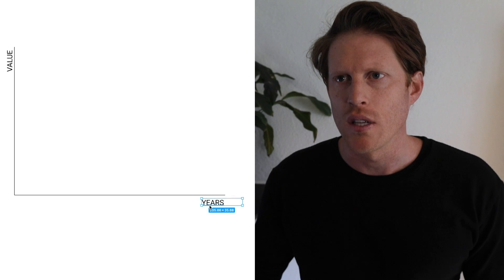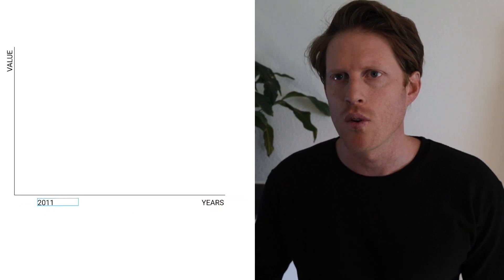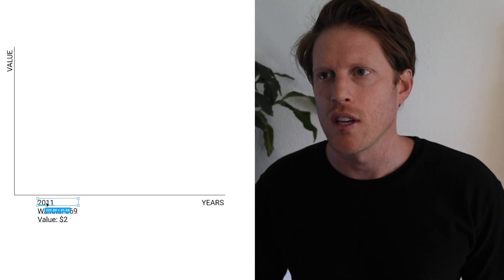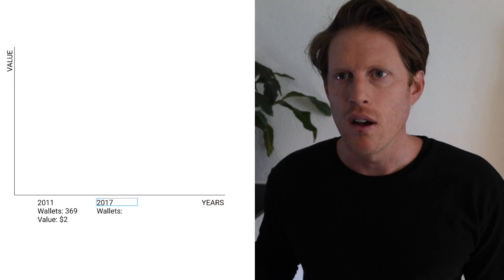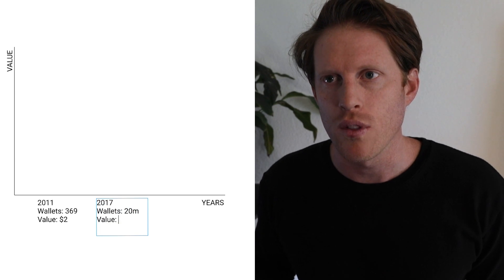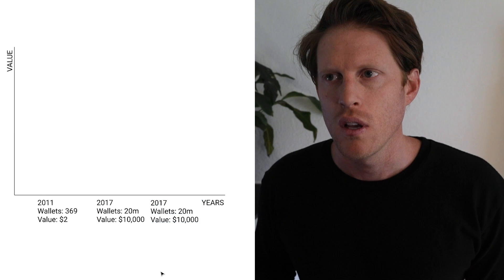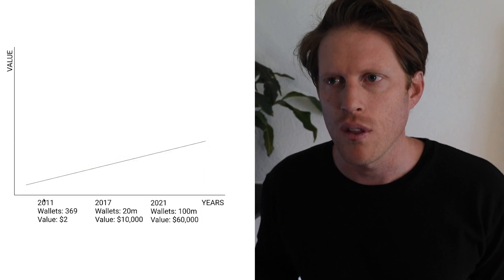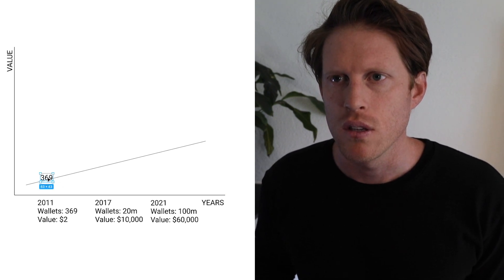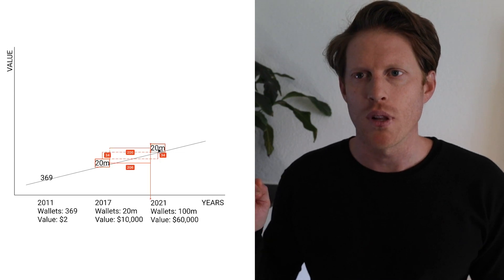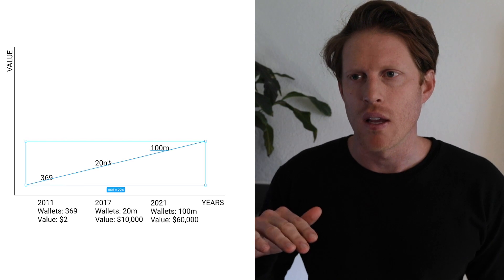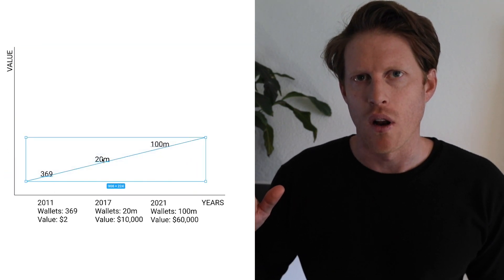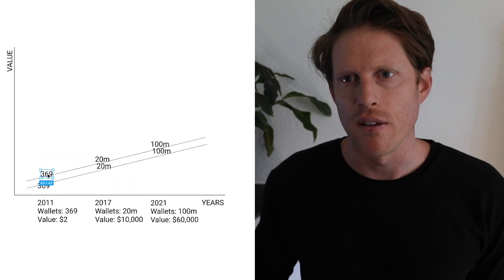Here's a quick illustration of how Metcalfe's law might apply. According to Blockchain.info, which first started tracking Bitcoin's price and wallet creation back in 2011, in late 2011 there were 369 Bitcoin wallets and the price was around $2. In late 2017 there were just over 20 million wallets and Bitcoin's price was approaching $10,000. Today, with 100 million Bitcoin wallets, the price just crossed the $60k mark. If you plot wallet count against price on a line, it looks very close to Metcalfe's chart.